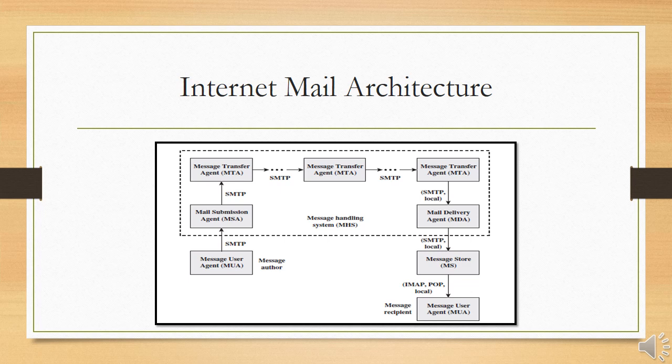This architecture creates a virtual MUA-to-MUA exchange environment and involves three types of interoperability. First, directly between users: messages must be formatted by the MUA on behalf of the message author so they can be displayed to the recipient. Second, between MUA and MHS: when a message is posted from an MUA to the MHS, and when it is delivered from the MHS to the destination MUA. Third, interoperability is required among the MTA components along the transfer path through the MHS.